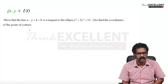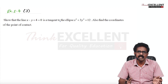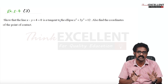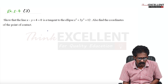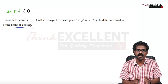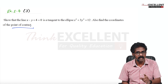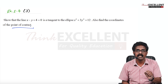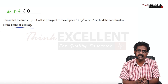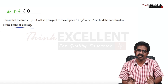Question 3: Show that the line is a tangent to the ellipse. Check whether the condition is satisfied — if it is, then the line is a tangent. The line is x - y + 4 = 0, rearranged to y = x + 4, so m = 1 and c = 4. The ellipse is X² + 3Y² = 12; dividing by 12 gives X²/12 + Y²/4 = 1, so A² = 12 and B² = 4.